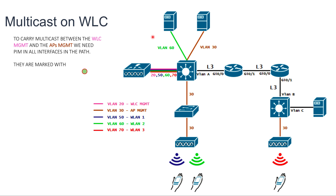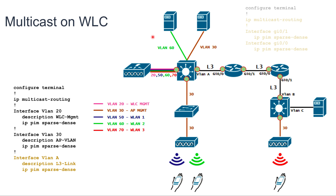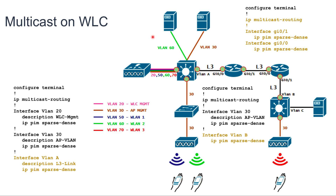In order to carry the Multicast traffic between the controller and the access points, we need to make sure that PIM routing is enabled between the controller management interface and the access point management interfaces. We'll enable PIM sparse mode on all the interfaces marked in the path — meaning VLAN A on the switch on the left, all the gigabit interfaces between the routers, VLAN B on the remote switch which is the upstream link, and then the access point VLAN.